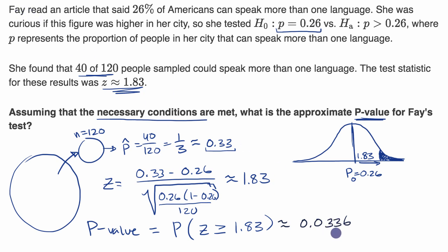And so what Fay would then do is compare that to the significance level that she should have set before conducting this significance test. And so if her significance level was, say, 5%, well, then in that situation, since this is lower than that significance level, she would be able to reject the null hypothesis.